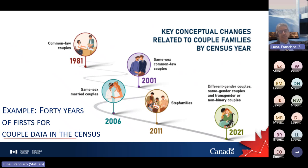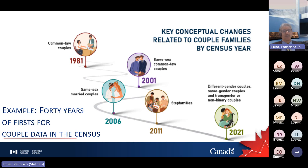Another concept that has been evolving and is very popular is the concept of family. In 1941, the concept of the census family was introduced, related to the traditional concept of family. Then in 1981, we began to collect information about common-law unions. And then in 2001, same-sex common-law couples.